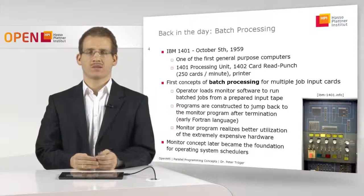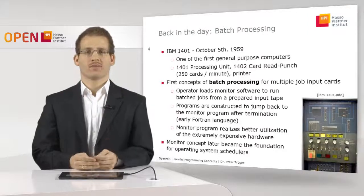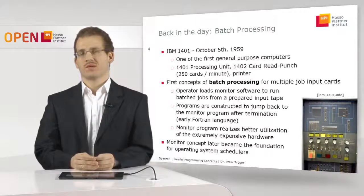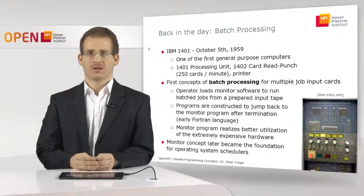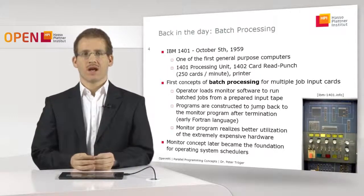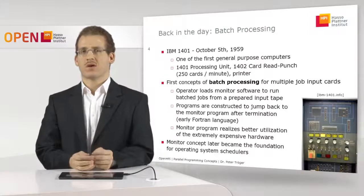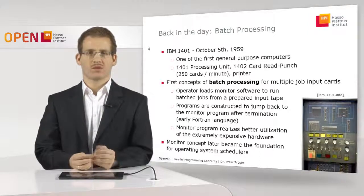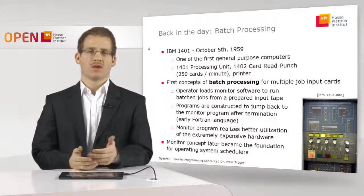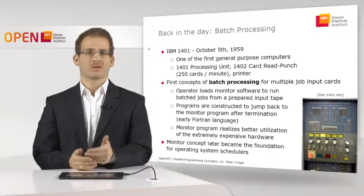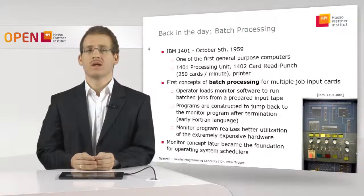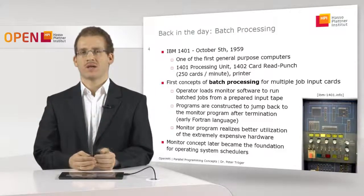The idea was that a computer cannot only deal with one program at a time but is able to take multiple programs as input and run them one after another. This batch processing approach was a novel idea because it allowed users and administrators to avoid gaps in the usage of these very expensive systems. To implement that, the software needed a new concept called a monitor. This monitor program coordinated the different input jobs from the cards: it was started on the system, took the first job, ran it to completion, then returned control so the next job could start. This kind of batch processing is still found in today's high-performance computing world, and at the time it was the foundation for what we know today as an operating system scheduler.